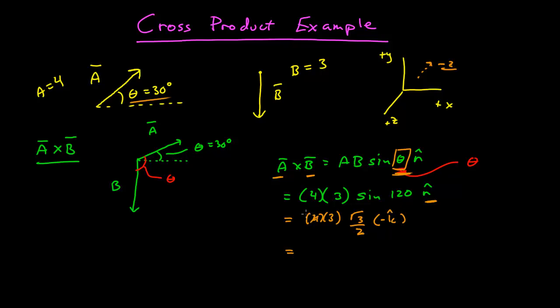So the cross product, there's a factor of 2, is 6 times the square root of 3, negative K hat.